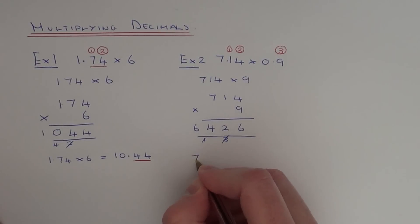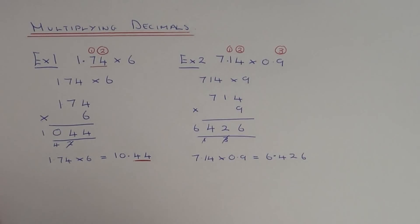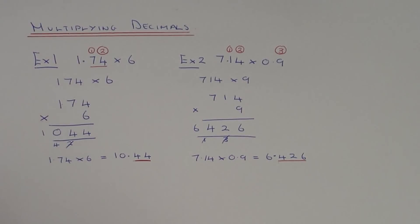So in our answer, we're going to have three numbers after the decimal point. We're going to put our decimal point here. So as you can see, you've got three numbers here after the decimal point. So it's 6.426.